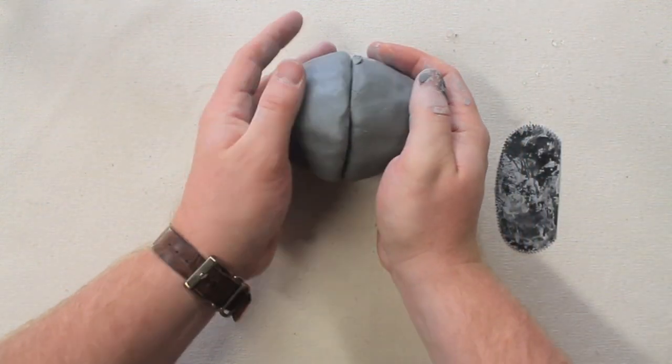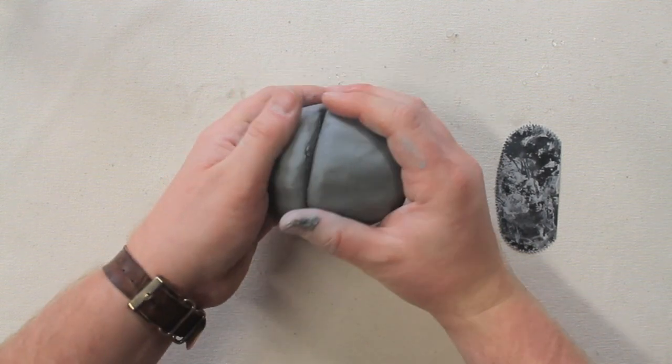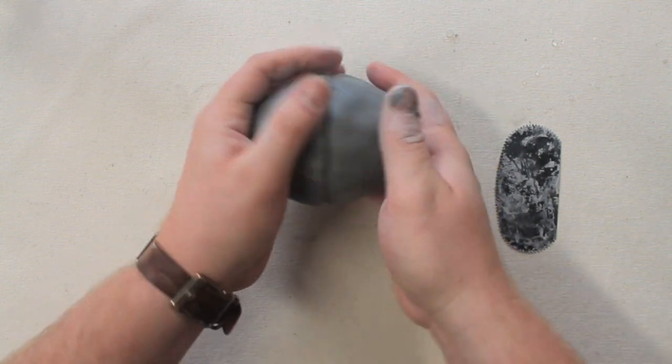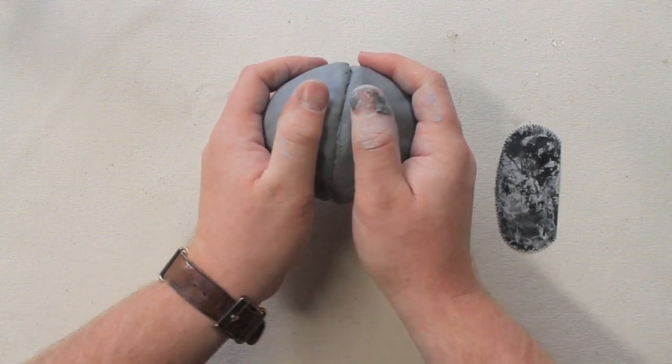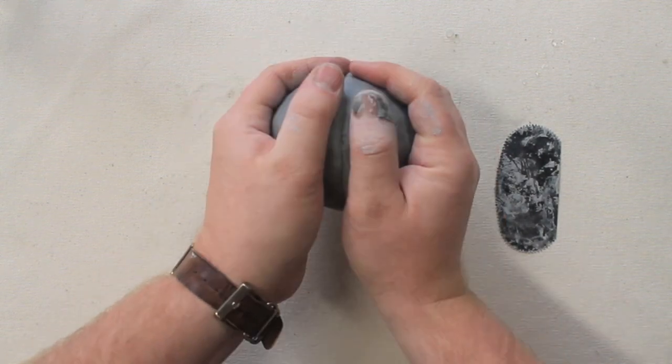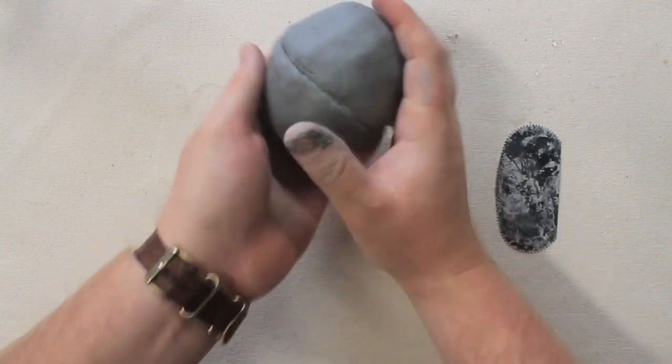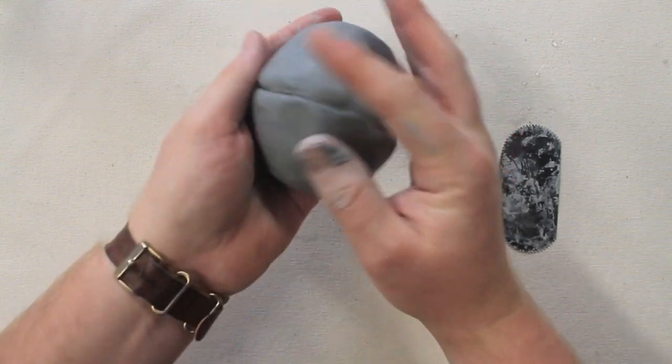Once you align the two pinch pots, make sure that they're evenly secured by applying gentle but firm pressure on all areas. Notice how I'm using the palms of my hand to cradle each piece together and making sure there's a good seal.